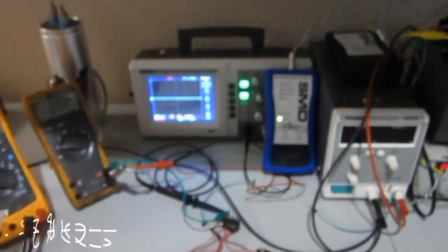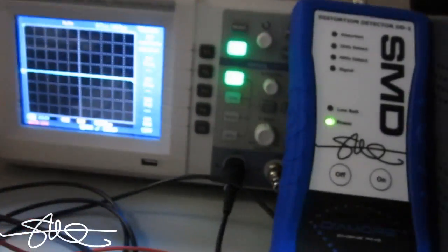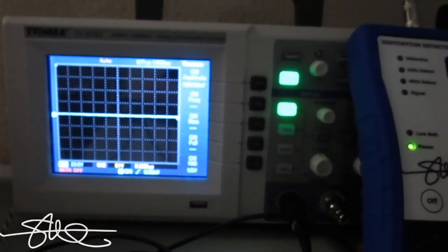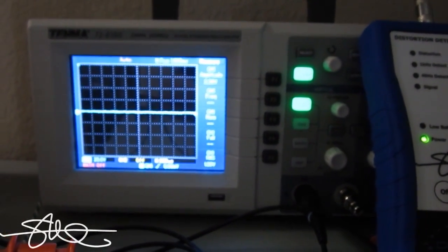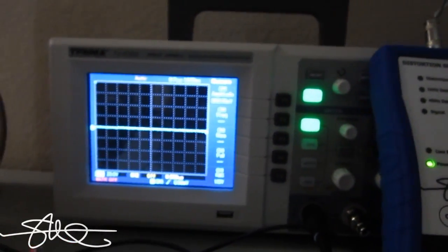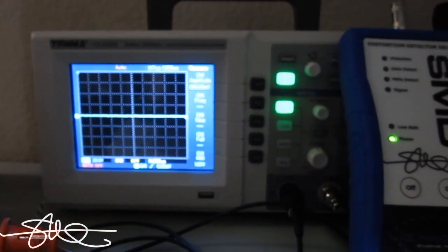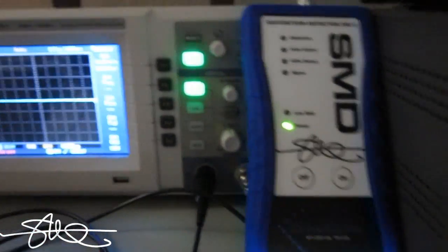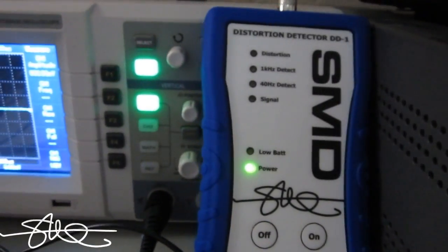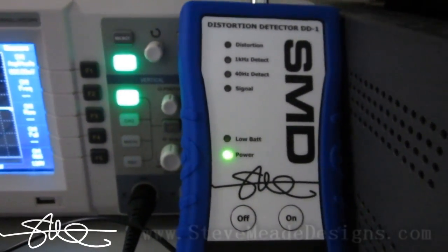I wanted to make a quick video on the DD1 versus an oscilloscope to show a pretty interesting issue. We were doing a car and the distortion detector DD1 was showing distortion all the time at any level.